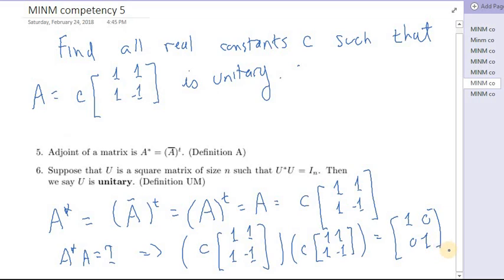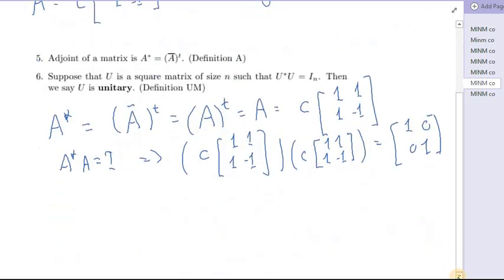All right, so how can we make this happen? Well let's do out the multiplication. When you have a matrix times a scalar you can pull all the scalars out to the front, so that's the same thing as C² times [1 1; 1 -1] times [1 1; 1 -1] equals [1 0; 0 1].